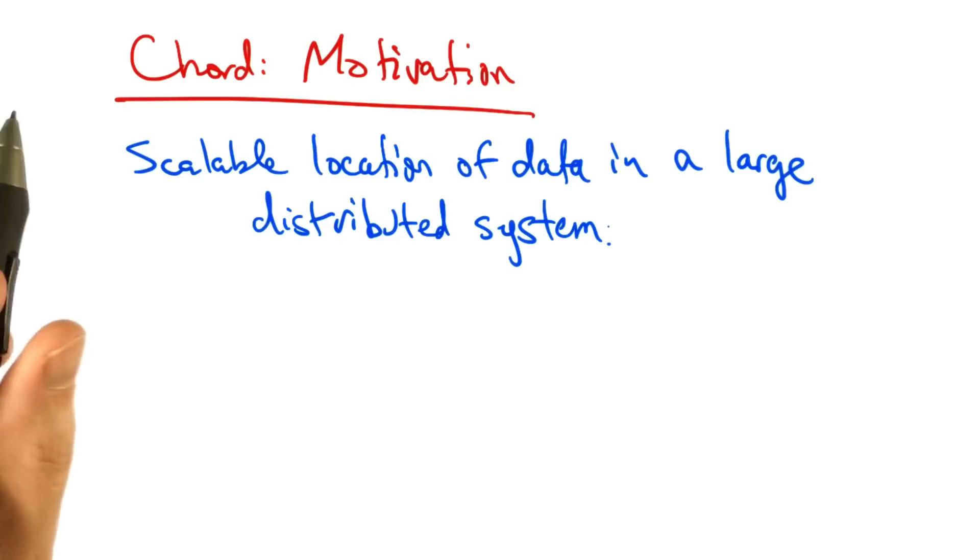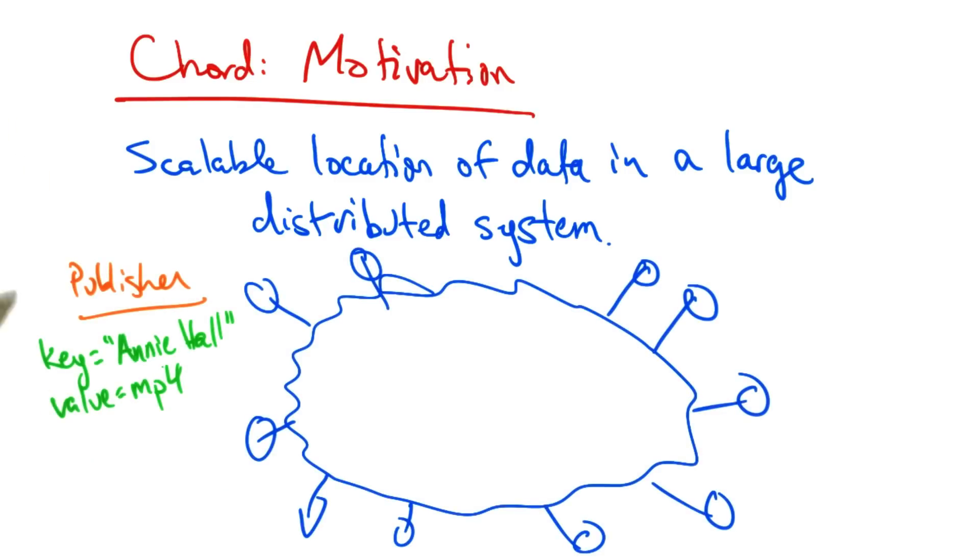The main motivation of Chord is scalable location of data in a large distributed system. So a publisher might want to publish the location of a particular piece of data, such as an MP4.